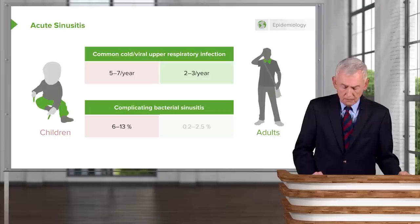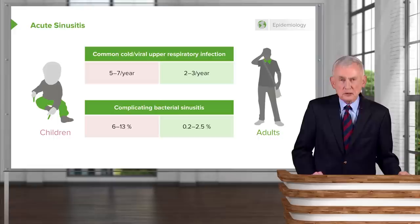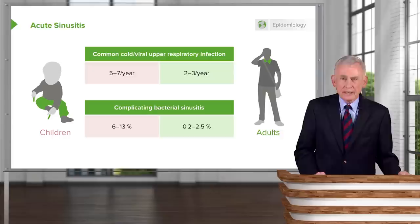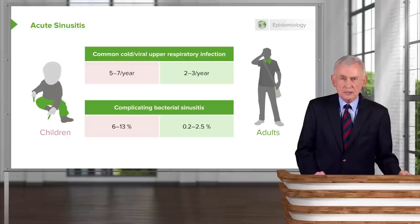Adults get bacterial sinusitis only 0.2 to 2.5% of the time. So most of the time when an adult comes in complaining of nasal congestion and purulent nasal secretions, they still have the common cold — not bacterial sinusitis. It is over-diagnosed and certainly over-treated with antibiotics.